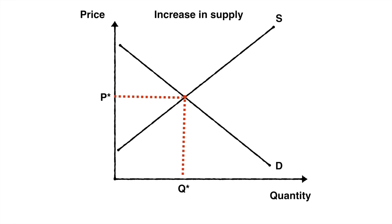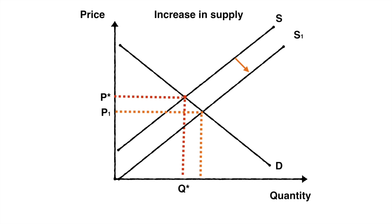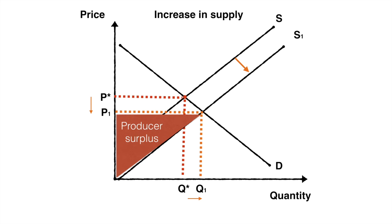For supply, we will first examine a change in producer surplus as a result of an increase in supply. From the initial position, we see our producer surplus as indicated at the start of the video. Once supply increases from S to S1, potentially as a result of an increase in productivity, the equilibrium price falls to P1 and equilibrium quantity rises to Q1. We adopt the same approach in considering our new producer surplus, using the new price as our upper border and the new supply curve S1 as our lower border. This area represents our new producer surplus.